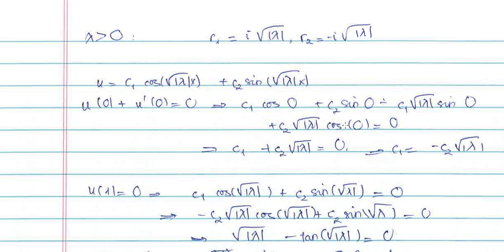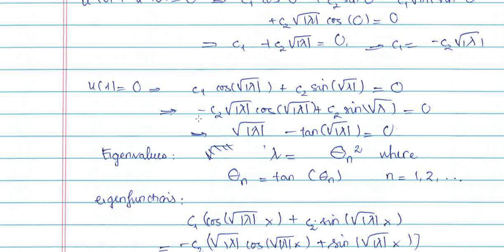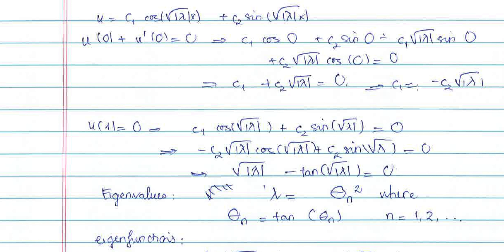From this we get c1 = -c2*sqrt(lambda). Now applying u(1) = 0: c1*cos(sqrt(lambda)) + c2*sin(sqrt(lambda)) = 0. Replacing c1 = -c2*sqrt(lambda) into this equation gives -c2*sqrt(lambda)*cos(sqrt(lambda)) + c2*sin(sqrt(lambda)) = 0. Factoring out c2*sqrt(lambda), we get that sqrt(lambda) - tan(sqrt(lambda)) = 0, or equivalently tan(sqrt(lambda)) = sqrt(lambda).